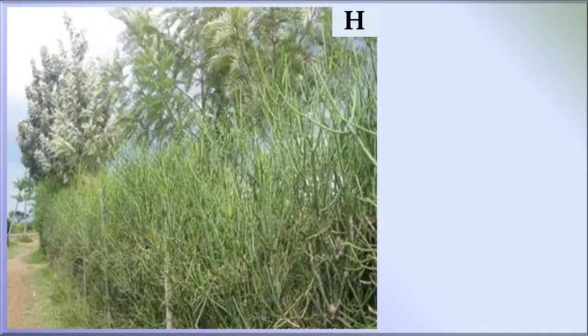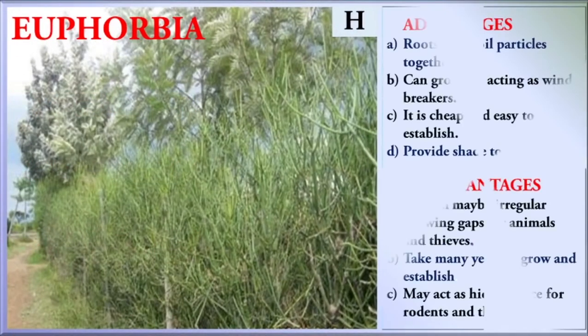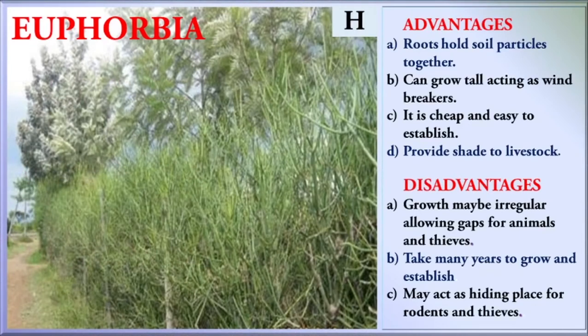Fence H is Euphobia, very suitable for dry areas. The advantages of Euphobia: the roots hold soil particles together, preventing soil erosion; it can grow tall, acting as windbreaker; it is cheap and easy to establish; and it provides shade to livestock. Some disadvantages: growth may be irregular, allowing gaps for animals and thieves; it takes many years to grow and establish; and it may act as a hiding place for rodents and thieves.